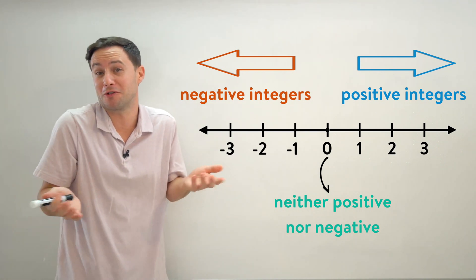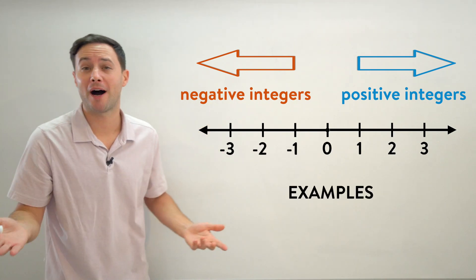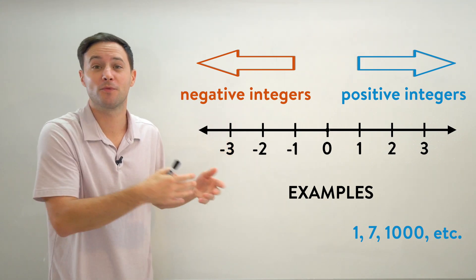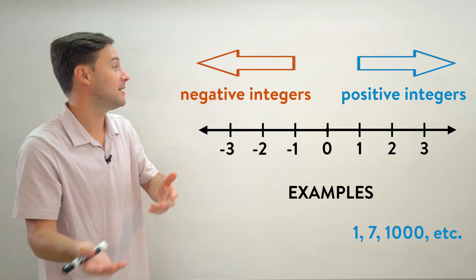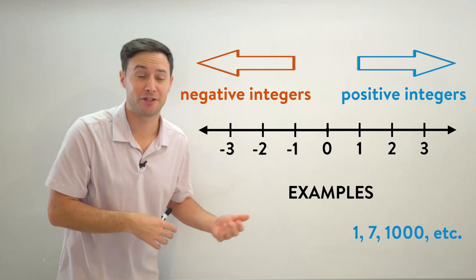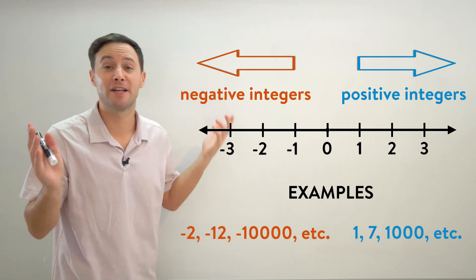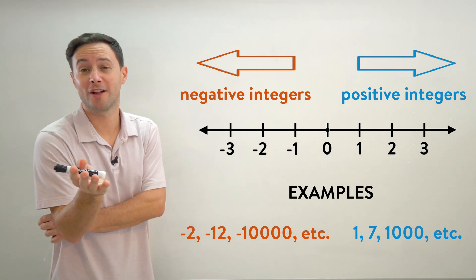Now some examples of some positive integers: one, seven, a thousand - those are all positive integers. Examples of negative integers would be like negative two, negative twelve, negative ten thousand - those are all examples of negative integers.